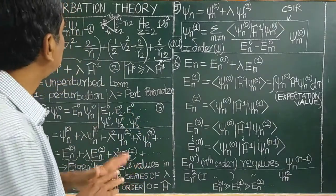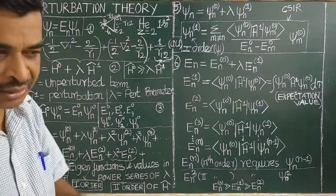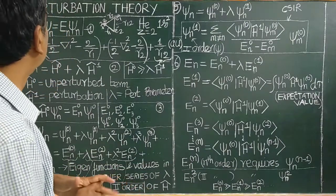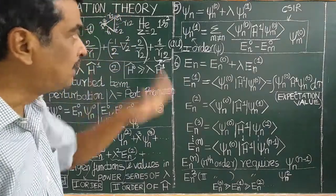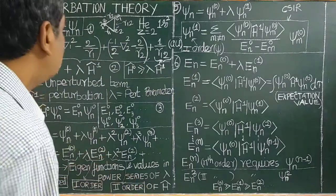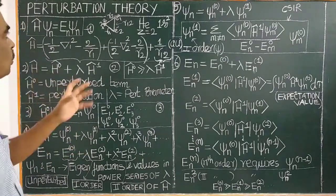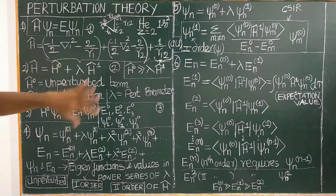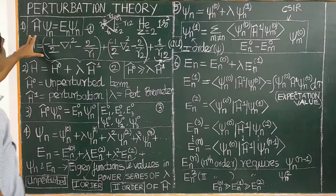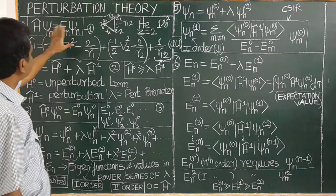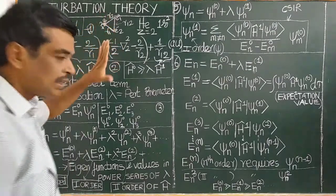To solve the Schrödinger wave equation — H-cap psi equal to E psi — for multi-electron atoms, we use the Hartree-Fock or perturbation theory. This theory is used for multi-electron atoms. It is an approximation method, similar to the variation method. The Schrödinger wave equation for a multi-electron atom is given by the formula H-cap psi equal to E psi.